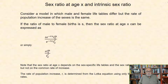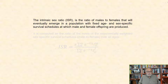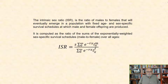The rate of population increase, R, is determined from the Lotka equation using only the female rates. The intrinsic sex ratio, ISR, is the ratio of males to females that will eventually emerge in a population with fixed age and sex-specific survival schedules at which male and female offspring are produced. It is computed as the ratio of the sums of the exponentially weighted sex-specific survival schedules over all ages.